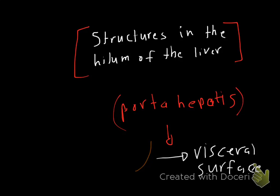Structures in the hilum of the liver: the liver has a portal vein and the hepatic artery. In addition to that, the liver makes a chemical which is bile. The bile is important in the absorption of some food. The bile is made in the liver and moves through a duct called the hepatic duct.